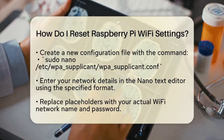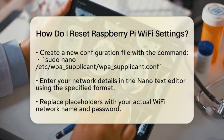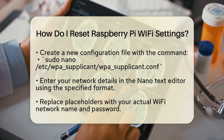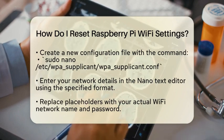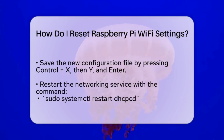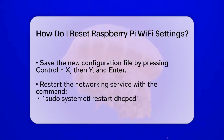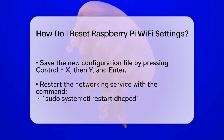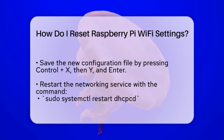In this file, you will need to enter your network details. The format should look like this: country=US, ctrl_interface=DIR=/var/run/wpa_supplicant GROUP=netdev, update_config=1, network={ SSID="your network SSID", psk="your network password" }.